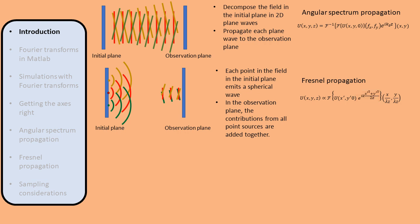Technically, the outcome should be multiplied with another phase factor, but if we are only interested in the intensity, we can leave it out. If we consider far-field propagation, the quadratic phase factor reduces to a constant, and the propagated field is simply given by the Fourier transform of the initial field. This is called Fraunhofer propagation.